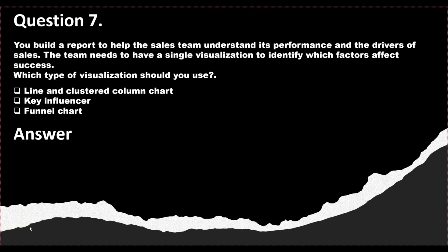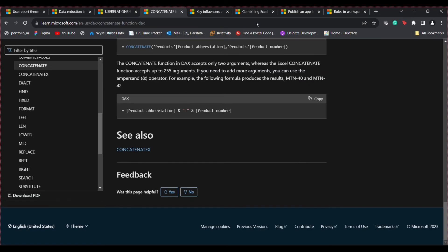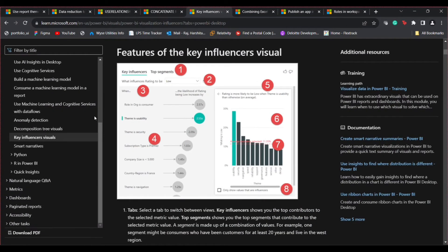Question number seven: you build a report to help the sales team understand its performance and drivers of sales. The team needs a single visualization to identify which factors affect success. The options are: line and clustered column chart, key influencer chart, or funnel chart. The correct answer is the key influencer chart. Always remember — whenever there is a sales data question asking about identifying key factors affecting performance, the answer is usually key influencer. It helps you identify the key factors that are affecting sales in a particular market or for a particular product.